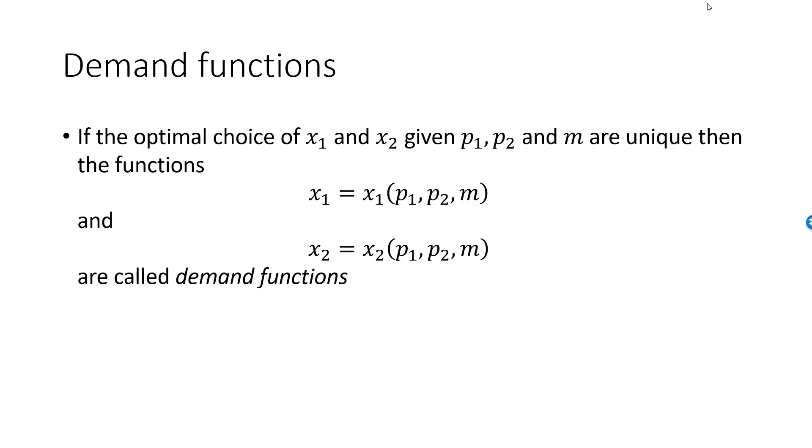These functions are called the demand functions for good 1 and good 2. If I know the demand functions, I can simply plug in prices and income into these functions, and they will return the optimal bundle.